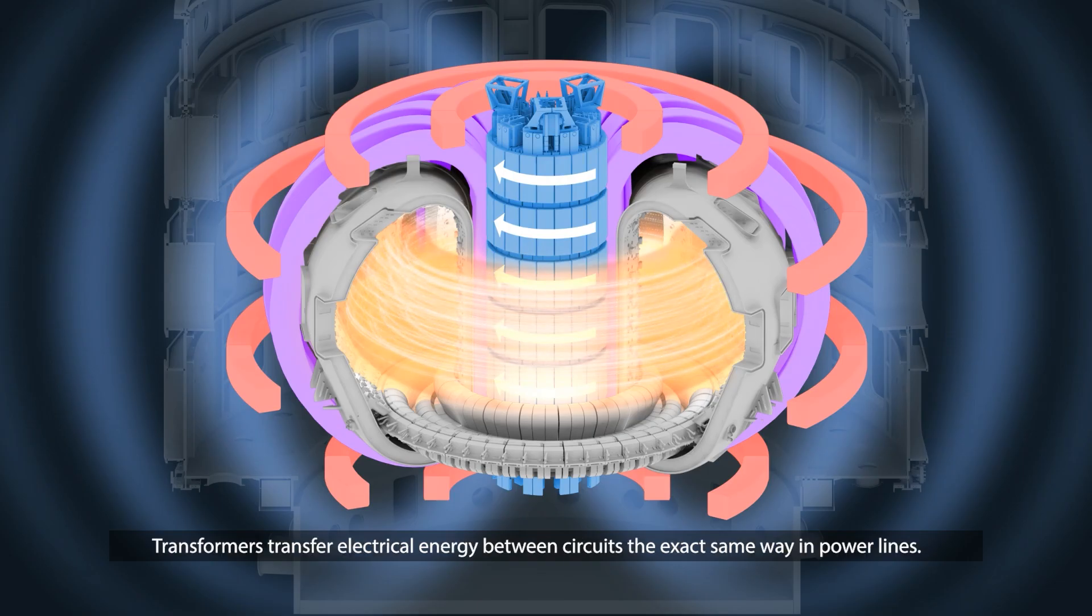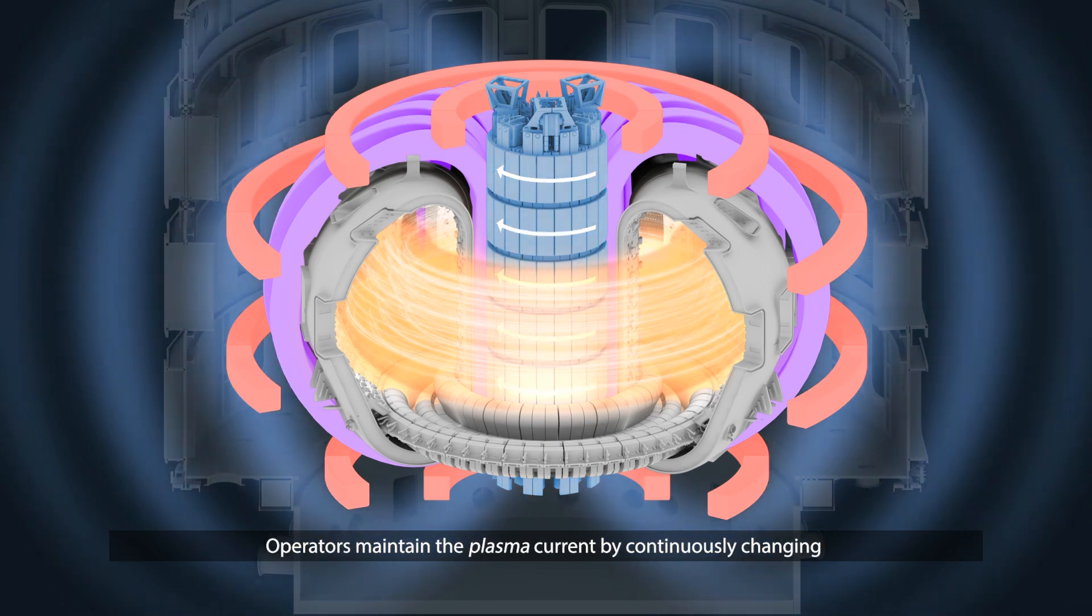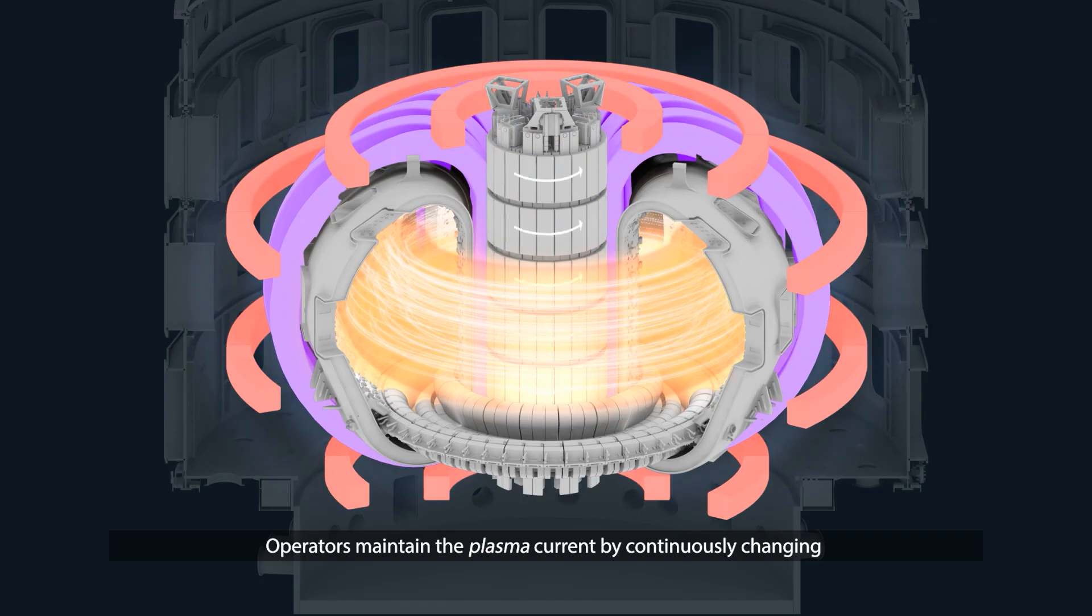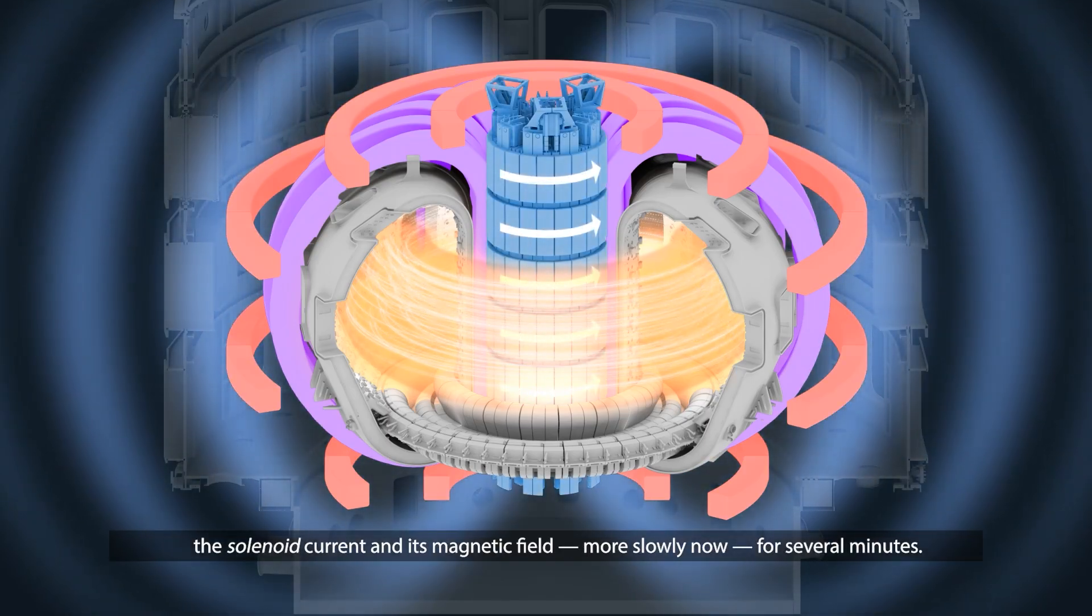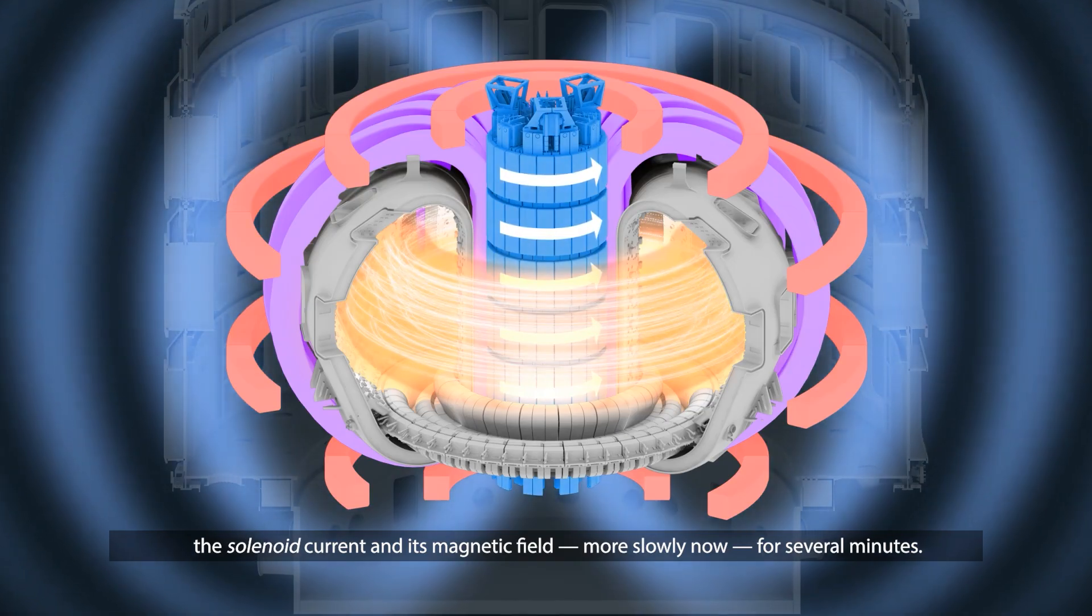Transformers transfer electrical energy between circuits the exact same way in power lines. Operators maintain the plasma current by continuously changing the solenoid current and its magnetic field, more slowly now, for several minutes.